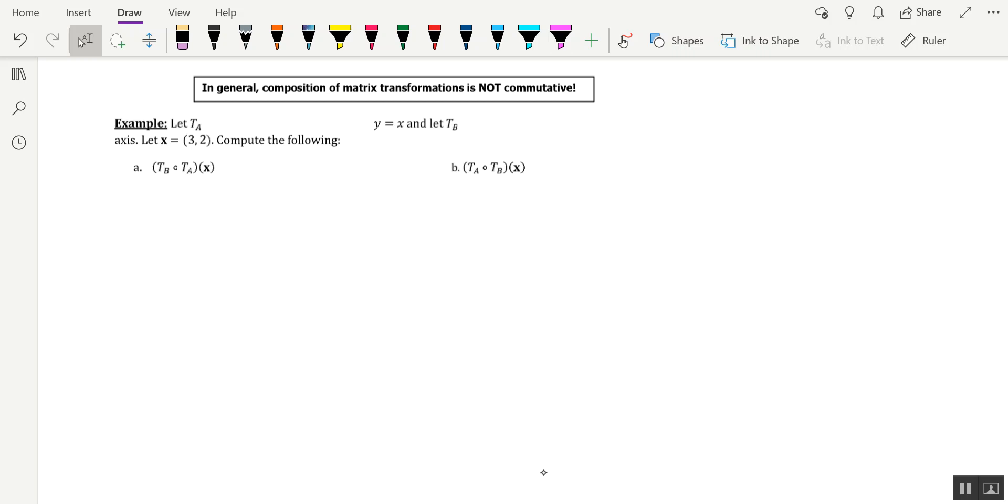What's going on linear algebros? In this video, I want to illustrate an example explaining why it's generally not true that matrix transformations are commutative.